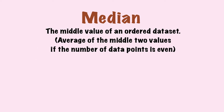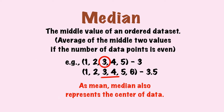Then we move on to median. Median is the middle value of an ordered data set, or the average of the middle two values if the number of data points is even. If we have data 1, 2, 3, 4, and 5, the median is the middle value 3. If the data is 1, 2, 3, 4, 5, and 6, the median is the average of the middle two values — 3 plus 4 divided by 2 — which is 3.5.